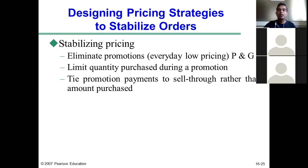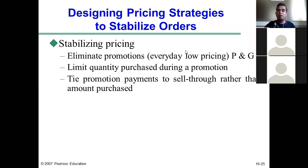To stabilize pricing and reduce the bullwhip effect, companies can eliminate or minimize promotions. Walmart practices a pricing policy called 'Everyday Low Pricing' — across all Walmart stores, all merchandise is sold below MRP 365 days a year. This ensures customers receive discounts on every visit and ensures stability in demand, helping reduce the bullwhip effect.